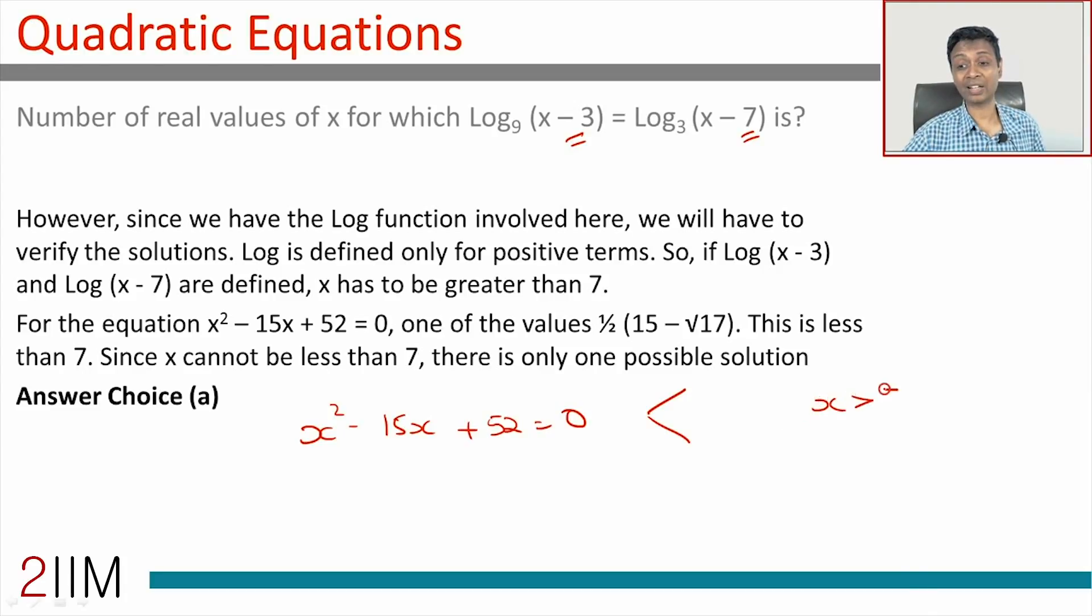Using the quadratic formula: x = [-b ± √(b² - 4ac)] / 2a gives us [15 ± √(225 - 208)] / 2, which is 15 ± √17 / 2.